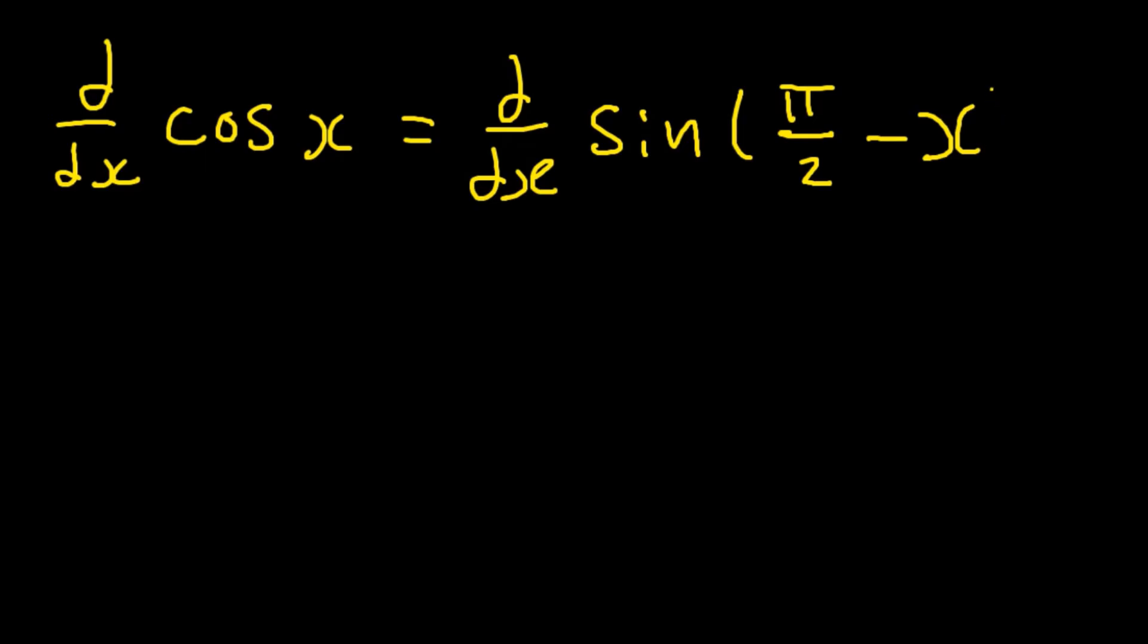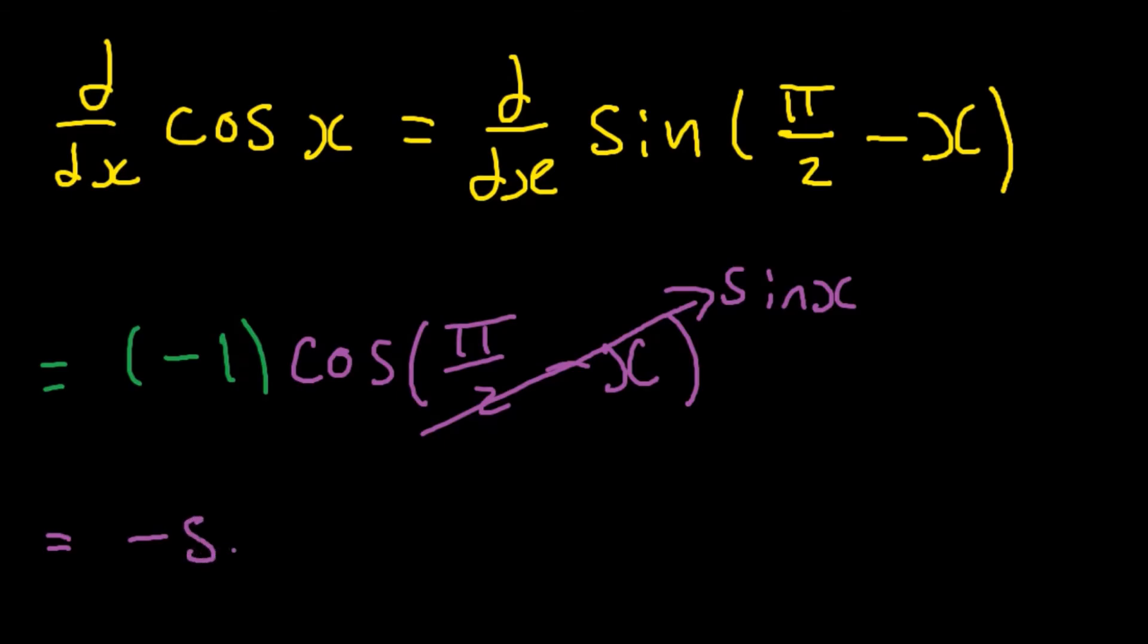Let's examine cos x to see how correct we are there. The first thing we can do is turn cos x into sine pi over two minus x using one of the identities we discussed in the trig series. Taking the derivative of this using the chain rule, the derivative of the inner function is minus one, and the derivative of the outer function is cos pi over two minus x. Using the same identity, cos pi over two minus x becomes sine x. So altogether, the derivative of cos x is minus sine x, again confirming our suspicions.